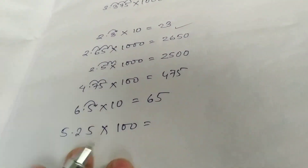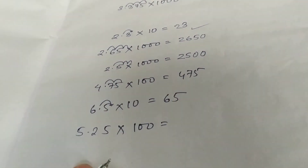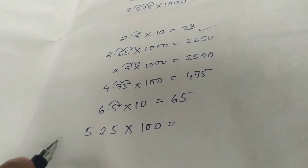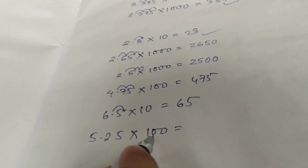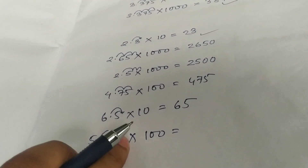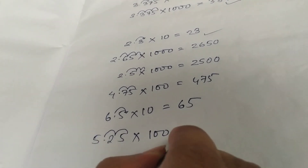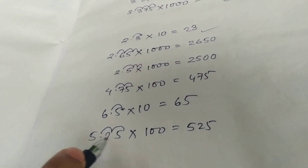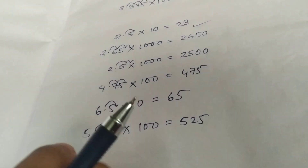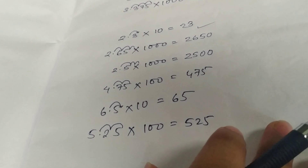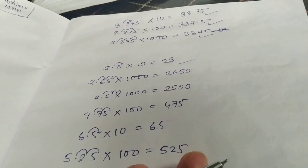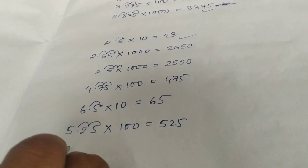For 6.5 × 10: one step — decimal moves after 5, no empty boxes — so it's 65. For 5.25 × 100: two zeros, decimal moves two steps — one step, two steps — it becomes 525. After five there are no trailing zeros needed. Answer: 525.